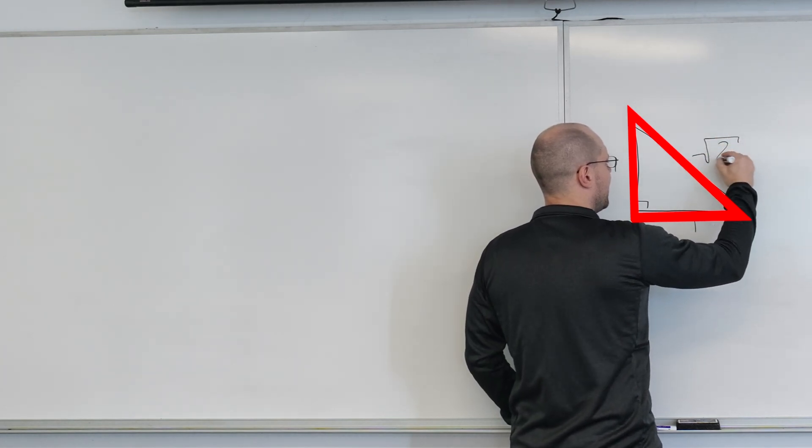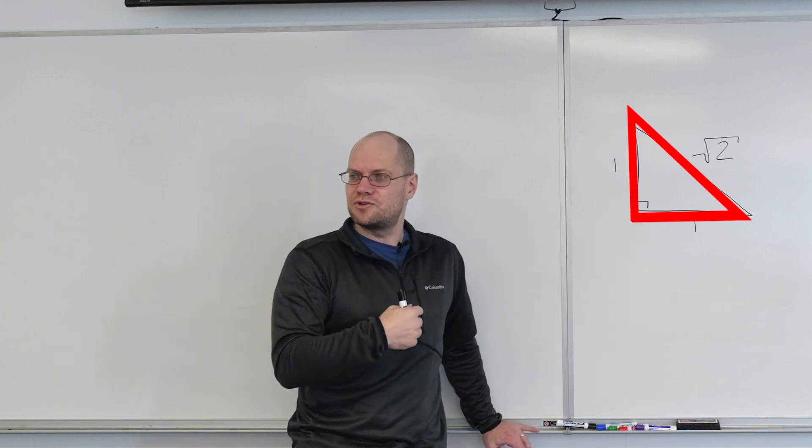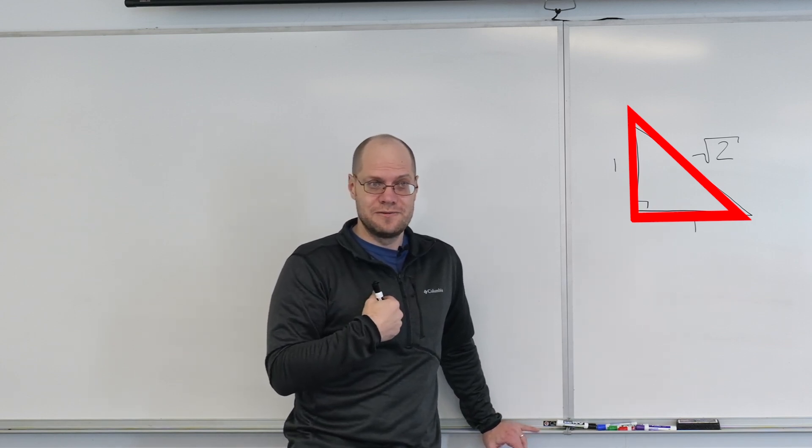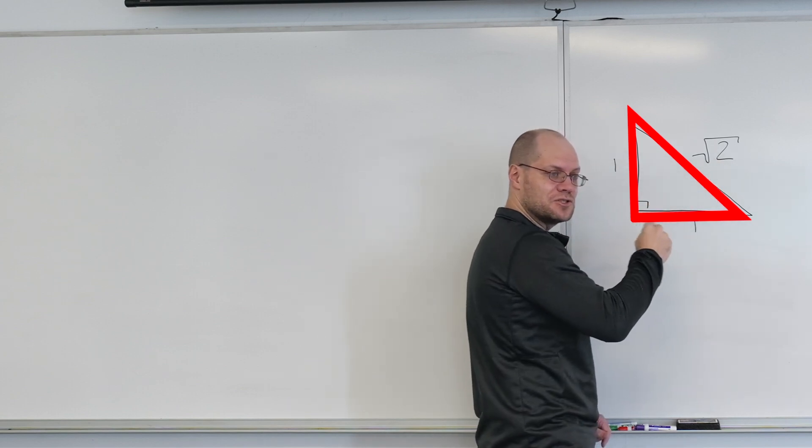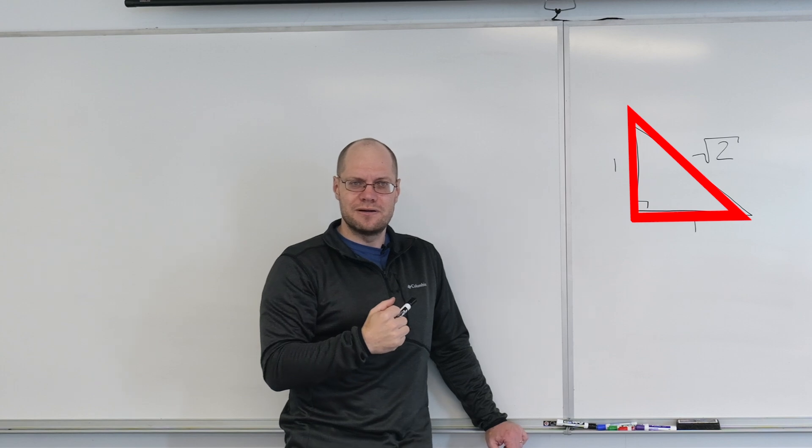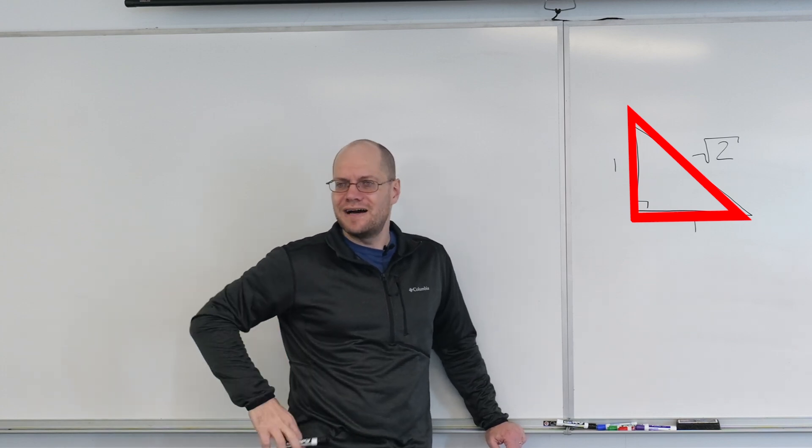They said, okay great, it's a number such that when squared it equals two. You agree with me? Because one squared plus one squared equals x squared, so x squared equals two. It's the number such that when squared it becomes two. Then they said, let's find that number.